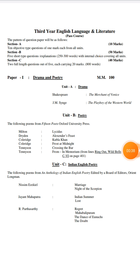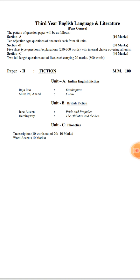There are two papers in BA third year. The first paper is Drama and Poetry, and the second paper is Fiction.